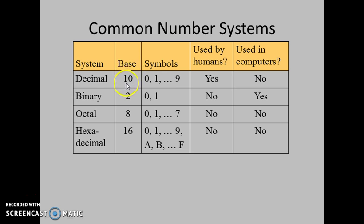Base denotes the total number of symbols used. In the decimal number system we use 10 symbols, in binary number system we use 2 symbols, in octal number system we use 8 symbols, and in hexadecimal number system we use 16 symbols.